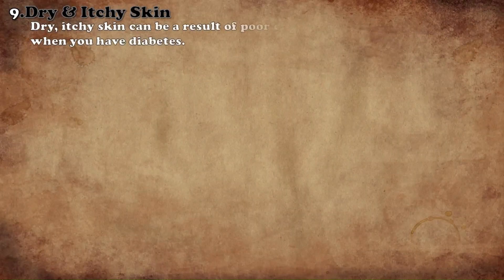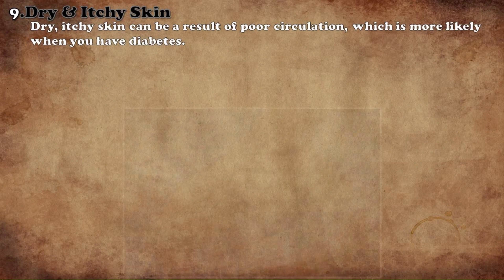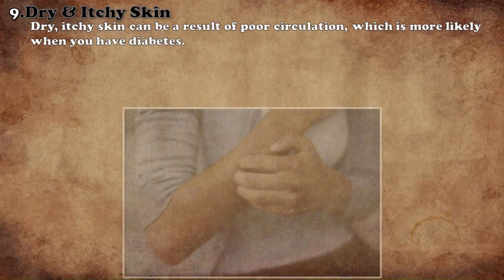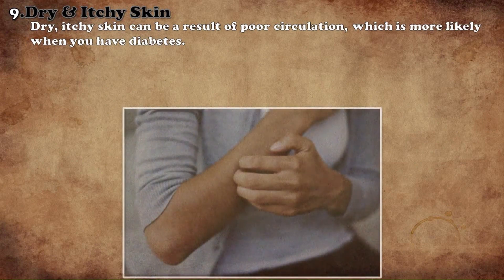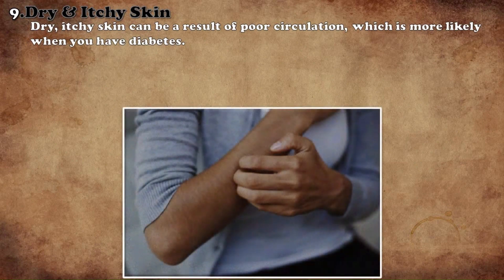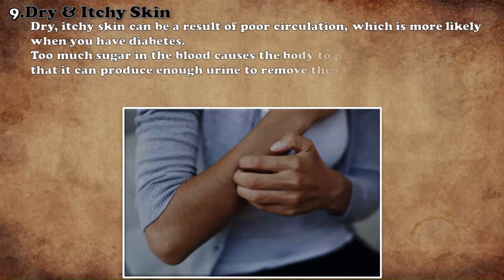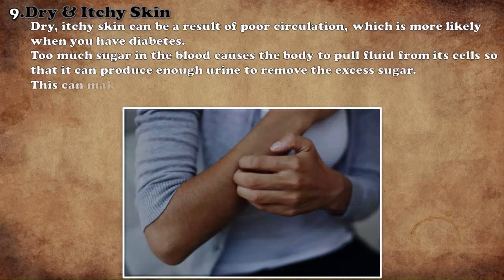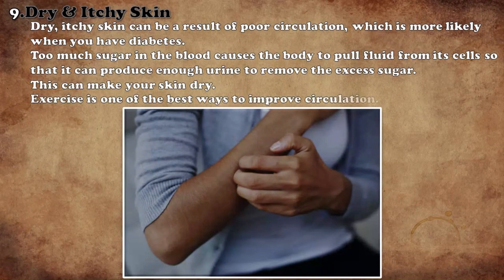Blood circulation is also affected in diabetic patients, due to which the skin becomes dry and itchy. Due to diabetes, urine also comes frequently, which affects the amount of water in the body. The most effective treatment for this is exercise.